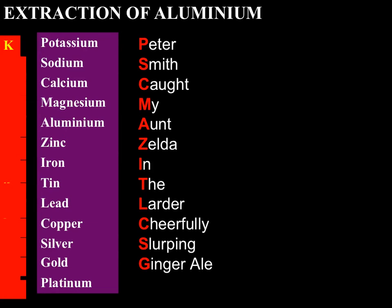Hi Year 12, this lesson we are going to consider how aluminium metal is extracted from its ore. Now if you're a higher tier student we're on page 121, and foundation tier we're on page 73.